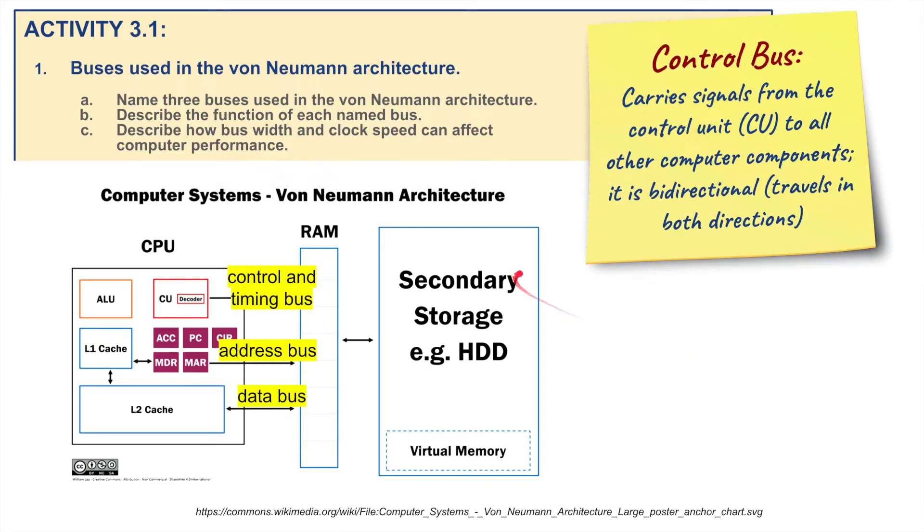Well first of all, the Control Bus. This carries signals from the CU, from the control unit, to all other components. It's bi-directional so it travels in both directions.